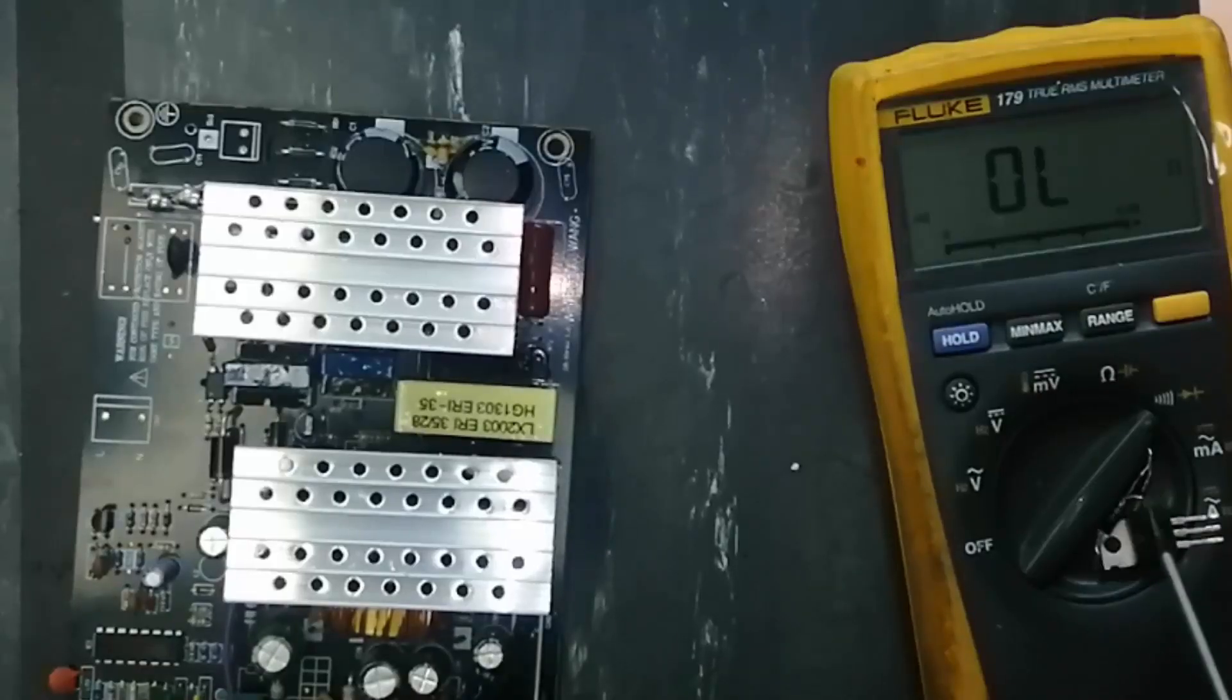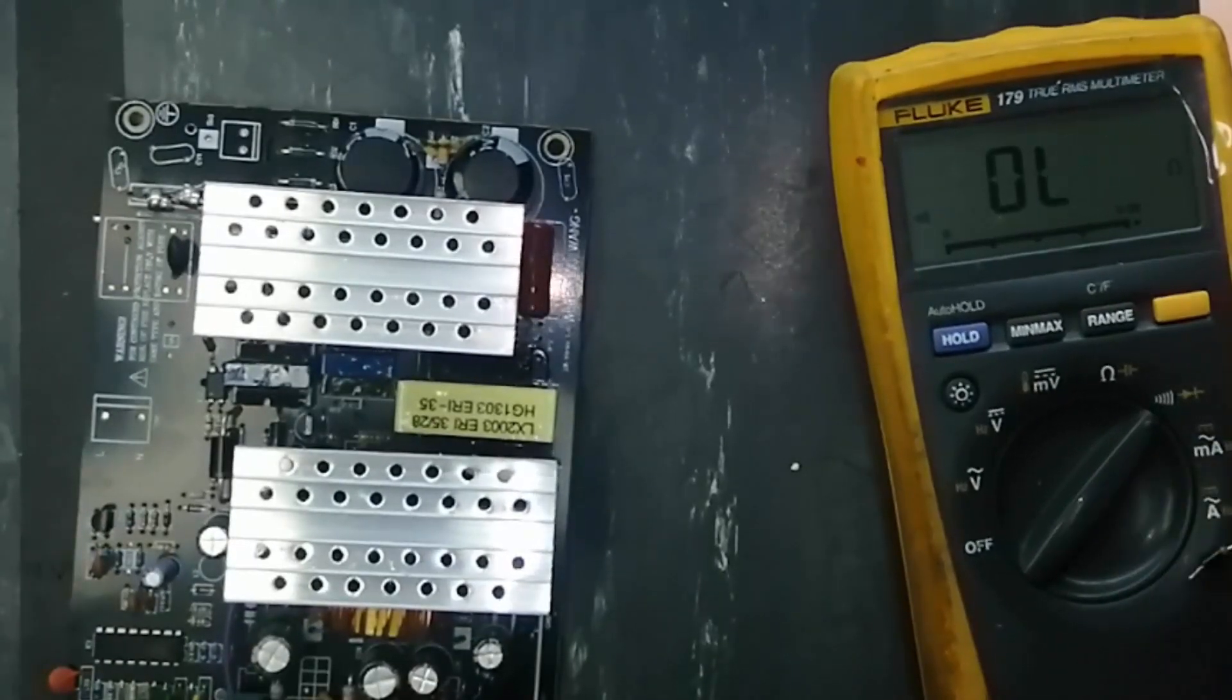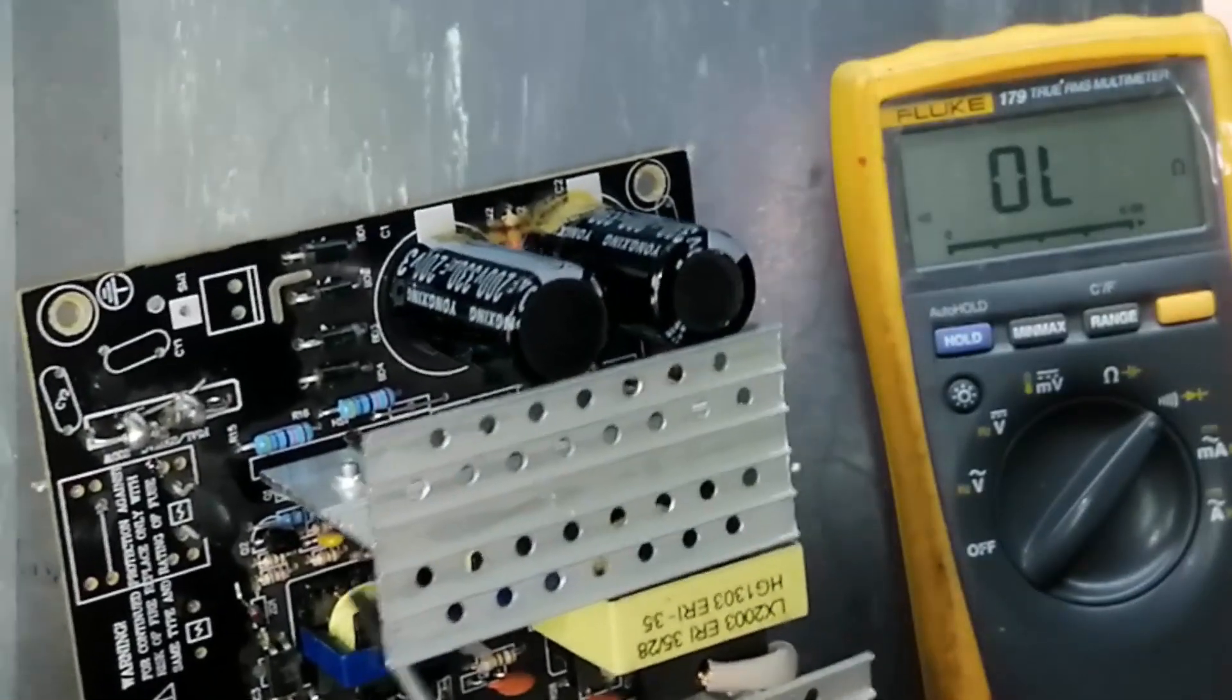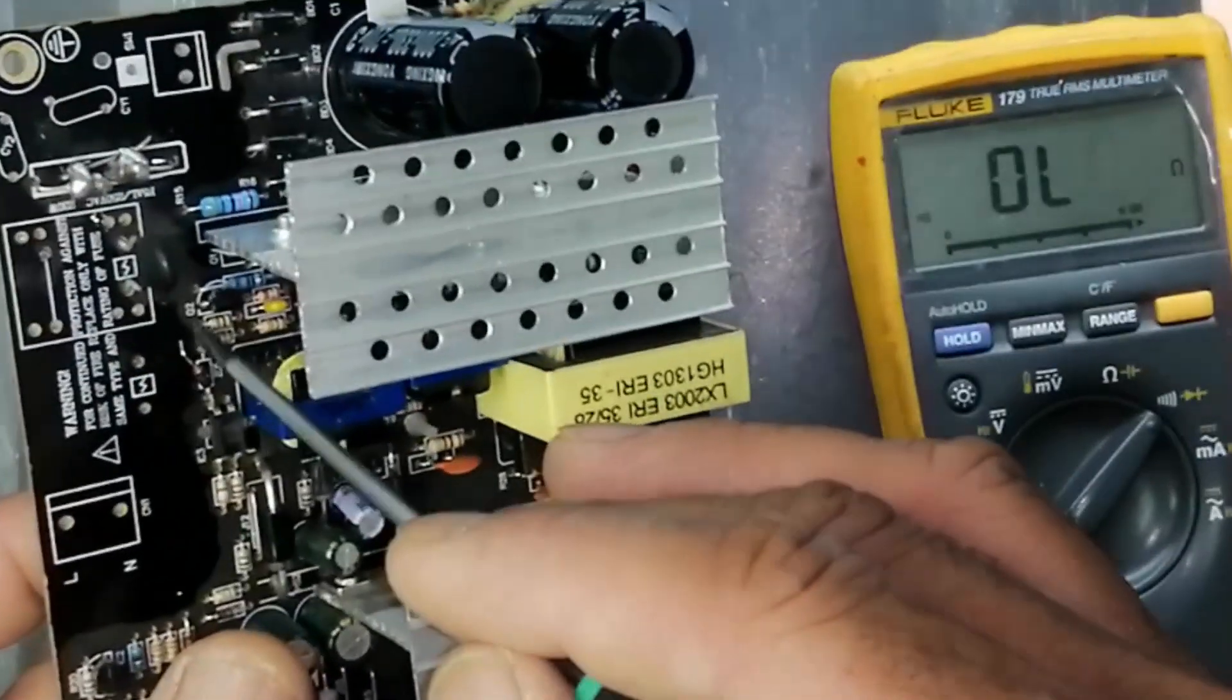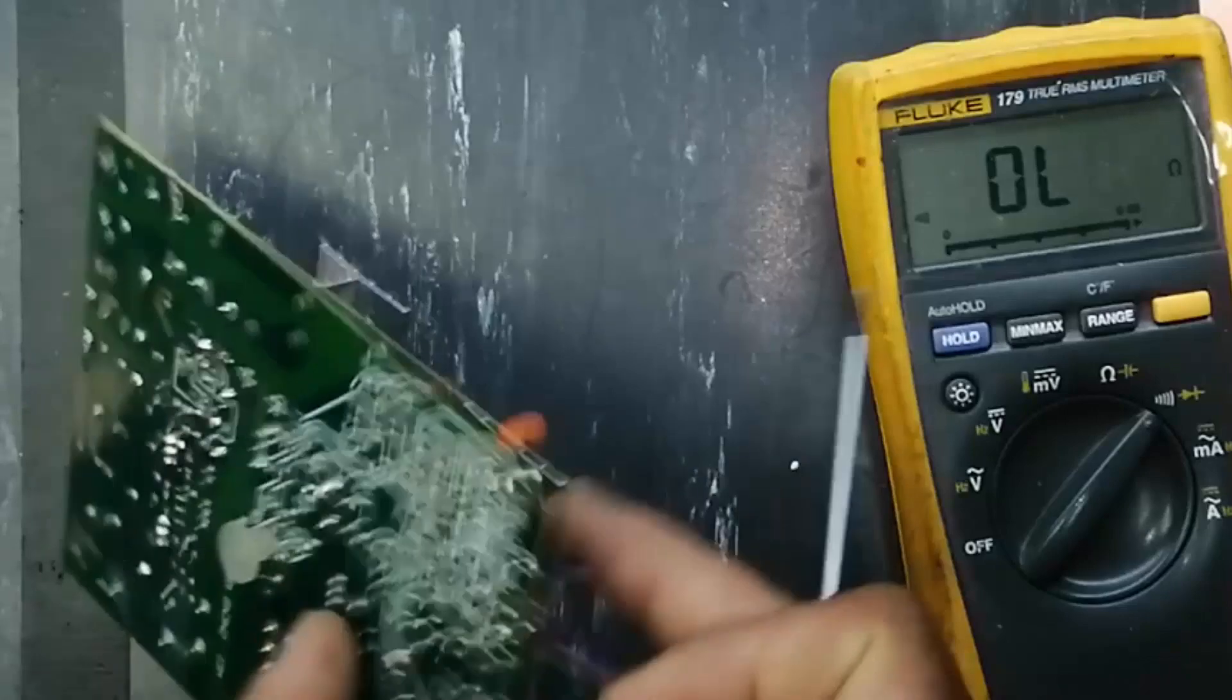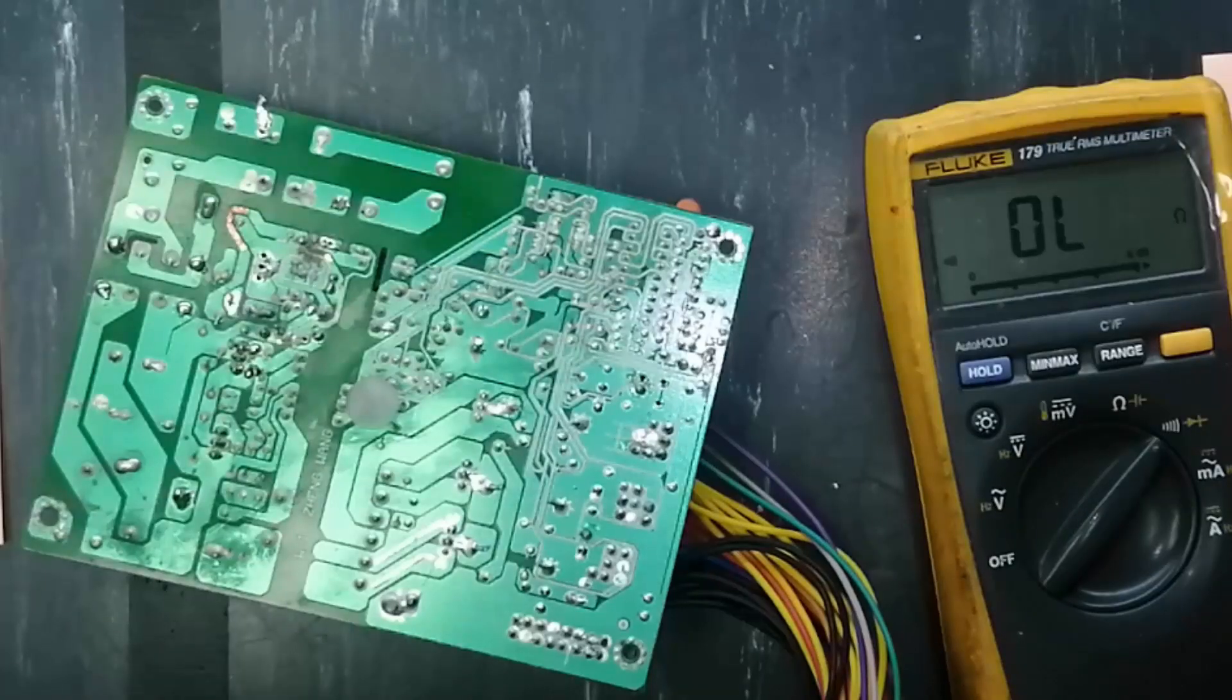In case we have these bad components, if we have some IC we cannot replace that IC, what will we do? Maybe the transformer is bad, maybe other components are bad, we cannot restore it. That means we can say it cannot be repaired. No, that's not a solution. If our this section is bad, we have another solution and we must do it. What you can do? It is an idea. I am just sharing my experience.